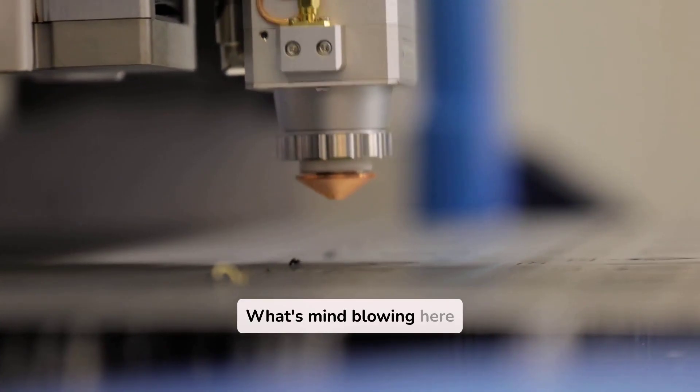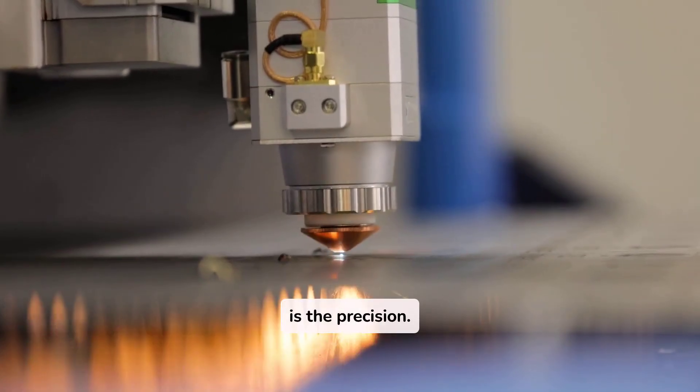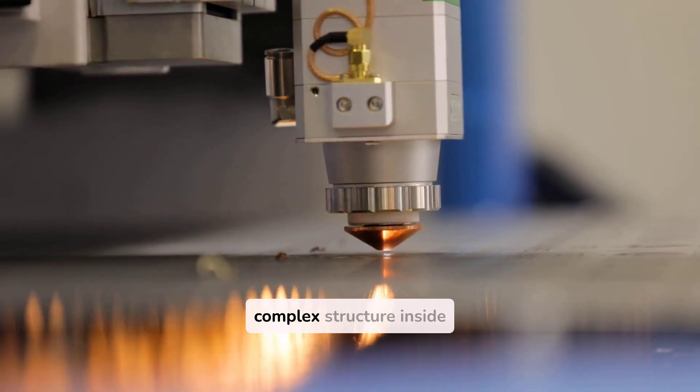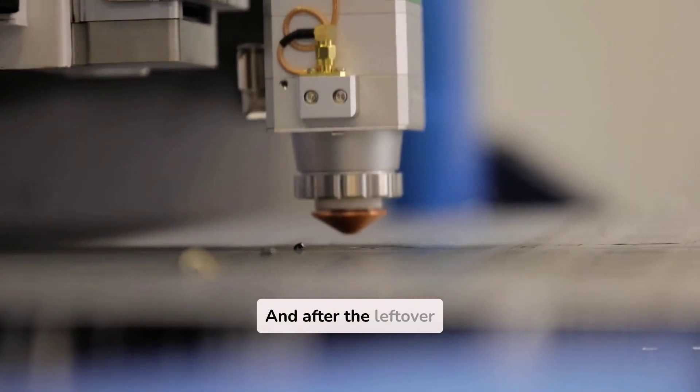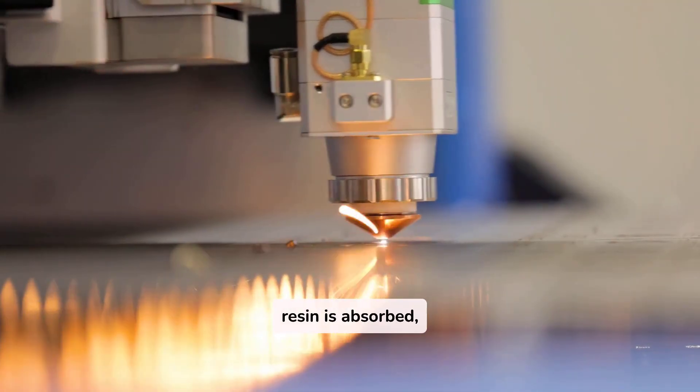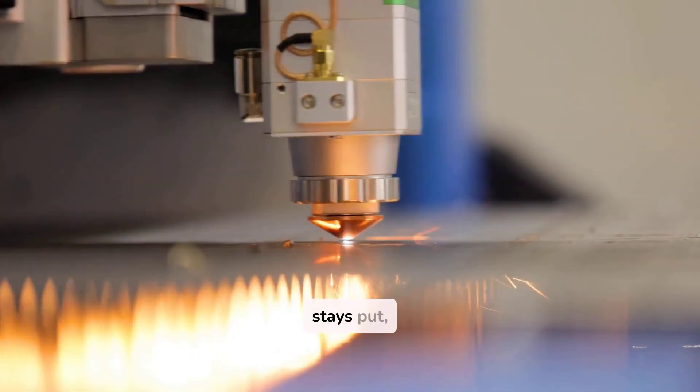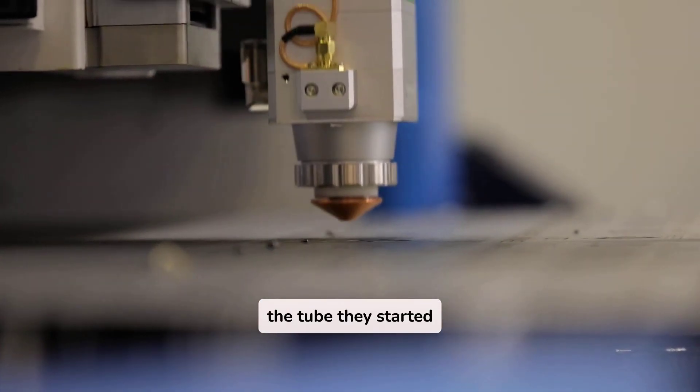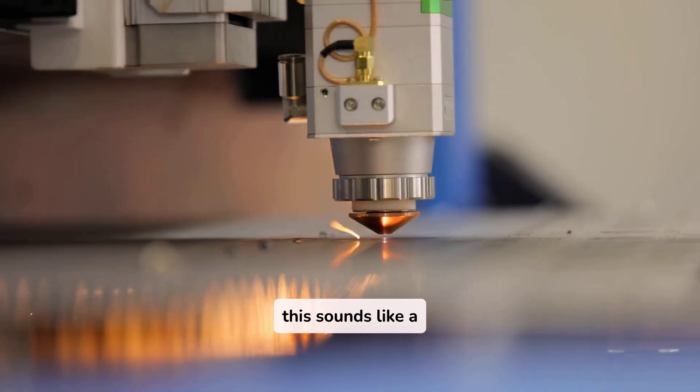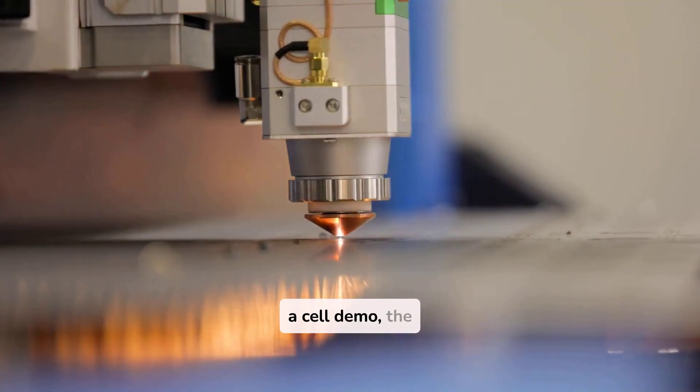What's mind-blowing here is the precision. The laser can print complex structures inside the living cell without destroying it. And, after the leftover resin is absorbed, the printed object stays put, even larger than the tube they started with.